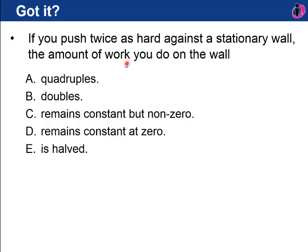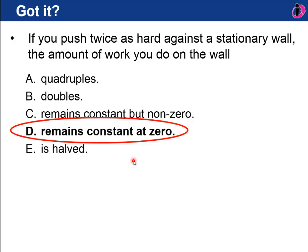Quick test: if you push twice as hard against a stationary wall, the amount of work you do — quadruples, doubles, remains constant but not zero, remains constant at zero, or is halved? The answer is zero. It doesn't matter how hard you push against something — if that thing is not moving, there's no distance, Δx is zero, and the work you do is zero. Even if you feel like you're sweating, in physics you're not doing any work.